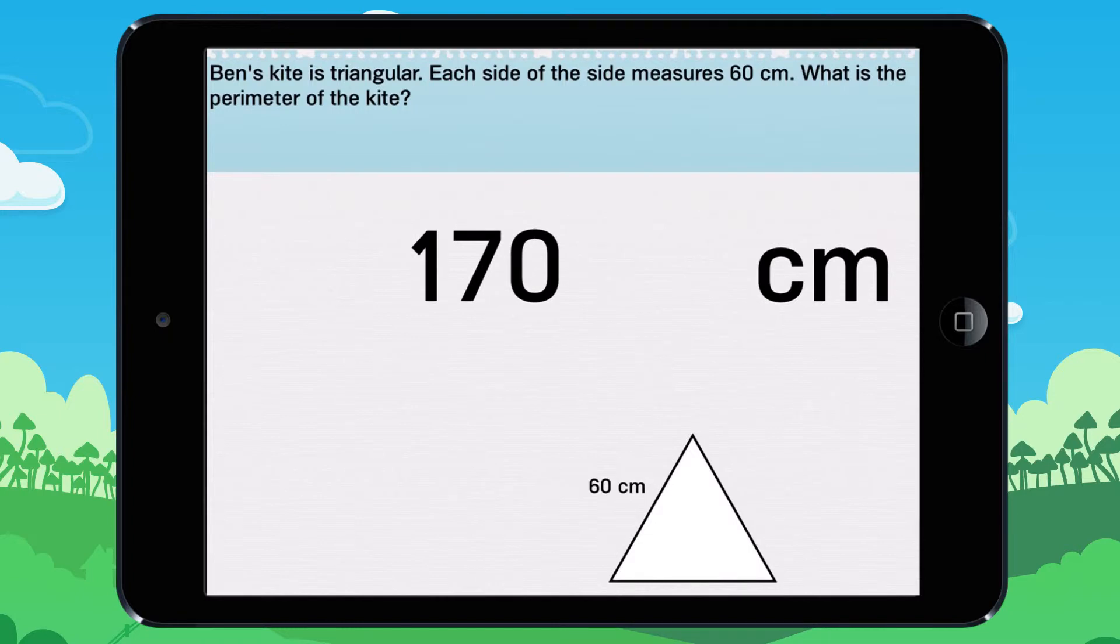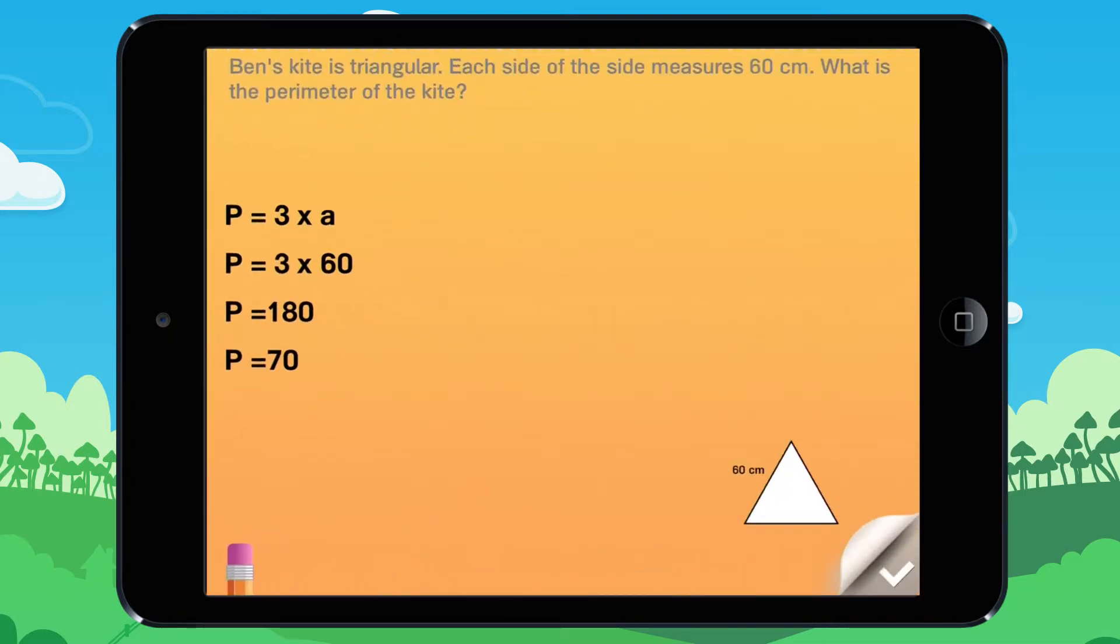Let's look at this together. The perimeter of an equilateral triangle is P equals that length of a side times 3.